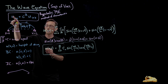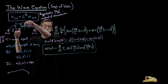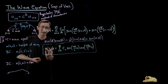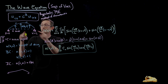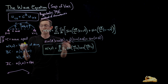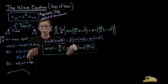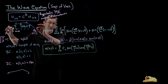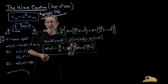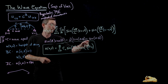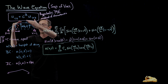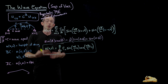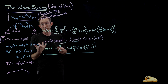The solution for the displacement of that string — the vertical position as a function of space x and time, u of x and t — is the product of sines in space. Sine waves in space satisfy the boundary condition with a period n*pi over L, which satisfies the boundary condition that the guitar string is pinned to be a length L. And there's a product of sines in x and cosines in time. These cosines in time cause the amplitude of these sine waves to oscillate in time, which creates the acoustic waves that you hear when you play a guitar string.